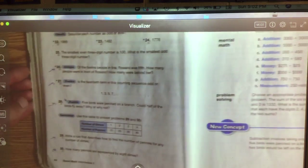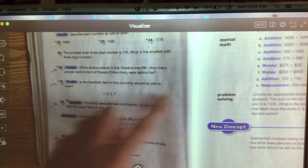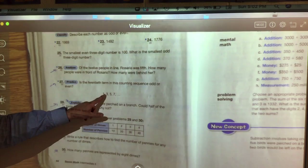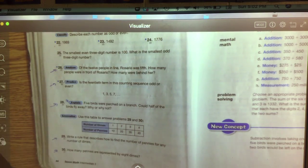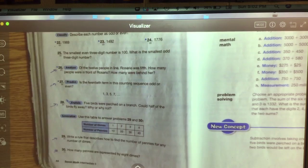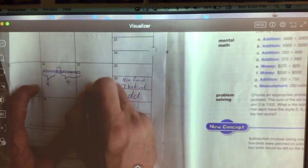Number 27. If the 12th term in this counting sequence is odd, or say them with me: odd, odd, odd, odd. The 12th one's going to be odd. Number 27 obviously is odd.